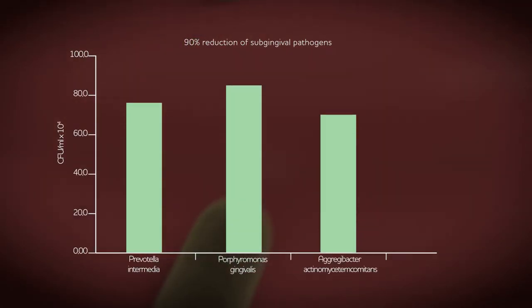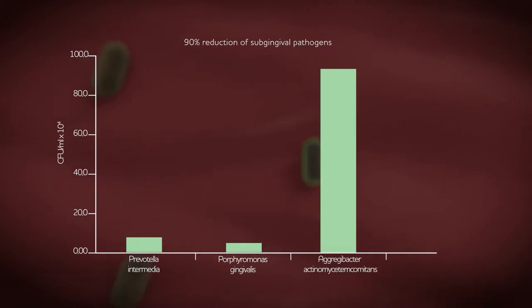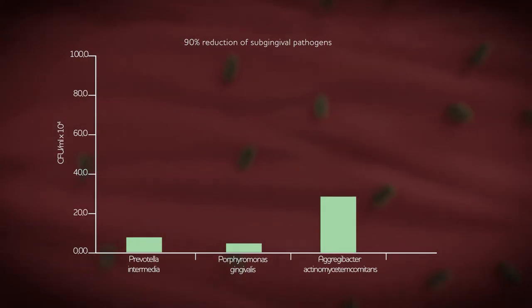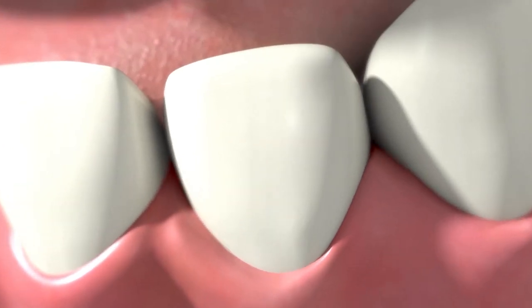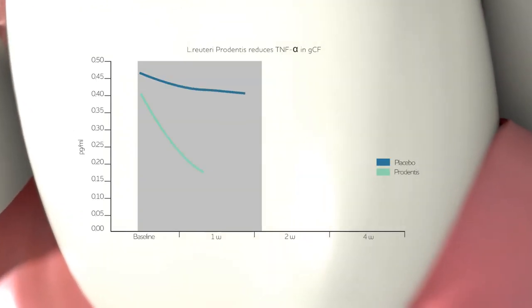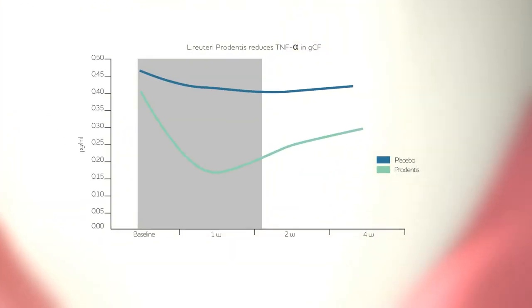A 90% reduction of subgingival pathogens like Prevotella intermedia, Porphyromonas gingivalis, and Aggregatibacter actinomycetemcomitans has been shown in studies, as well as an anti-inflammatory effect by inhibiting TNF-alpha production in biofilms.